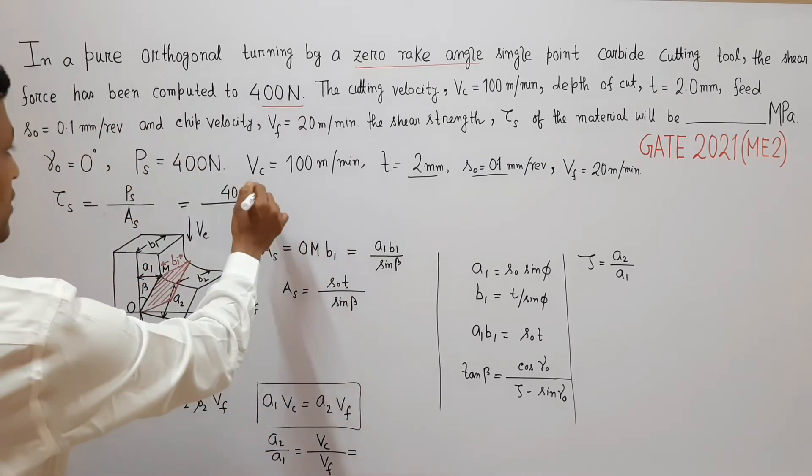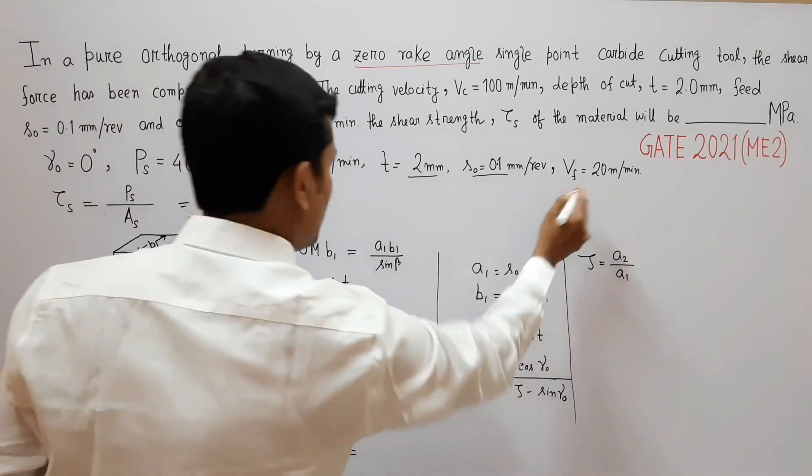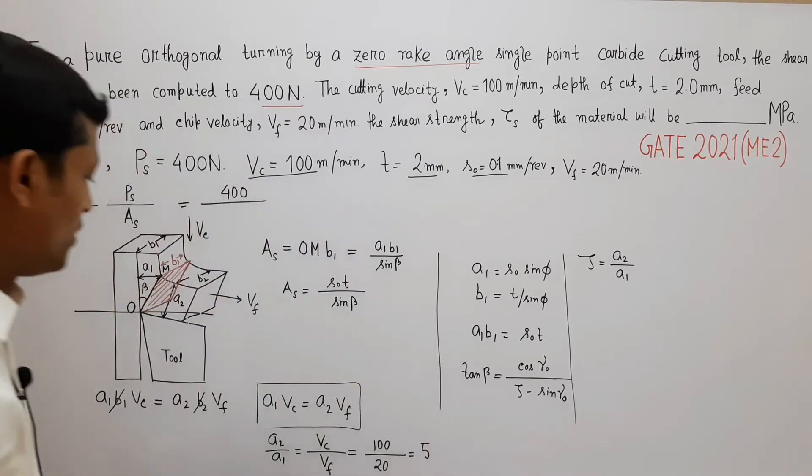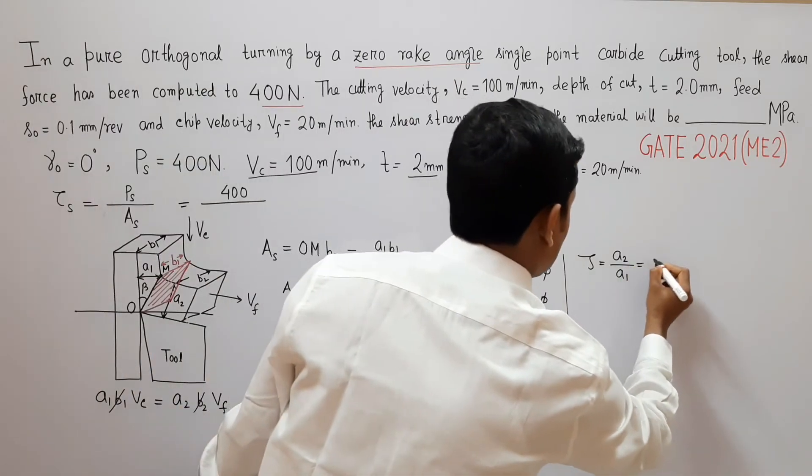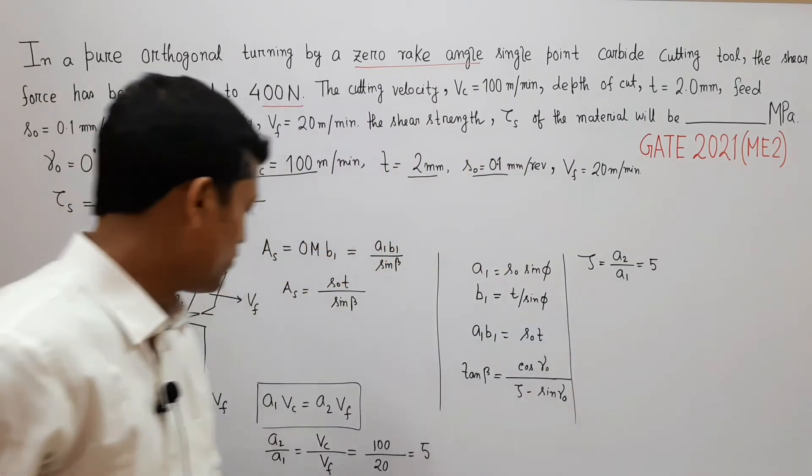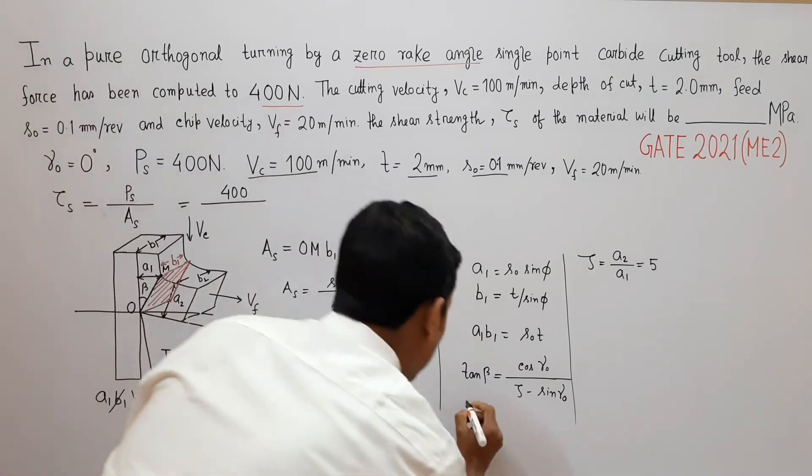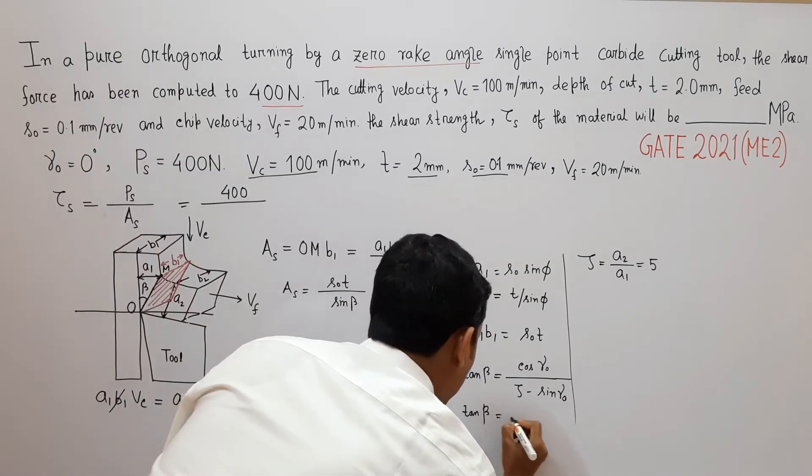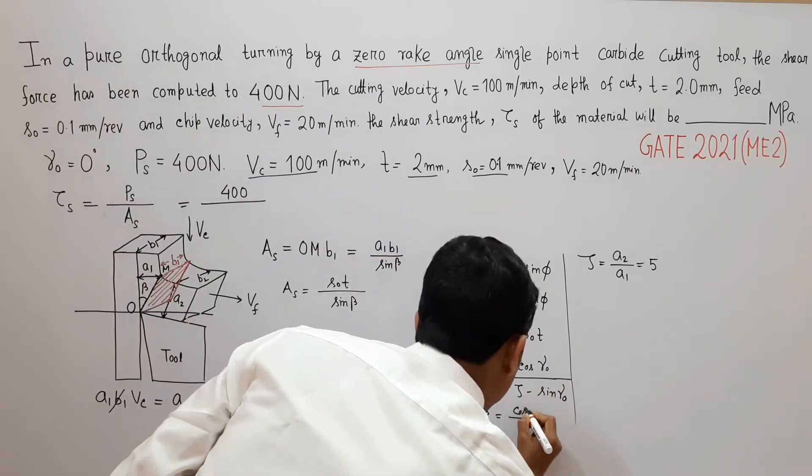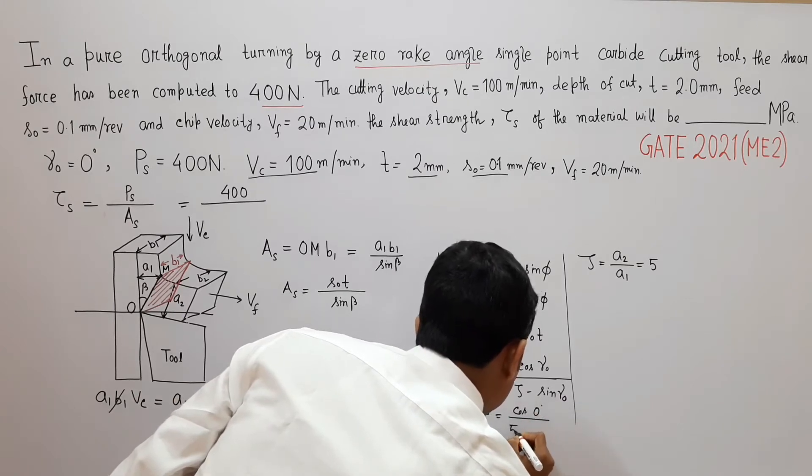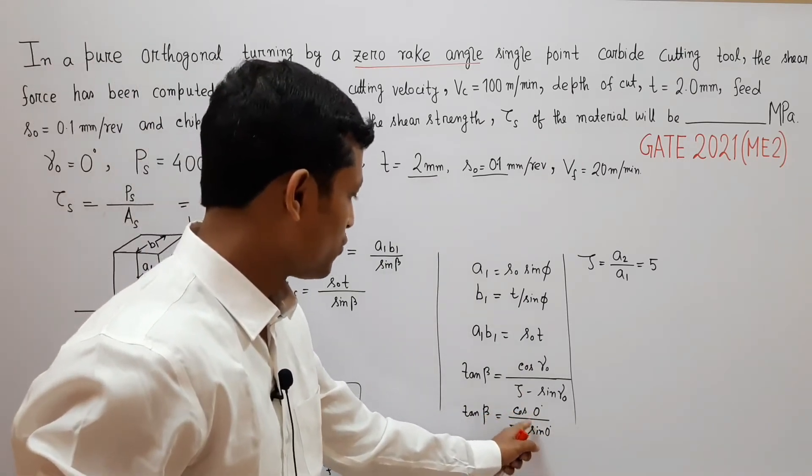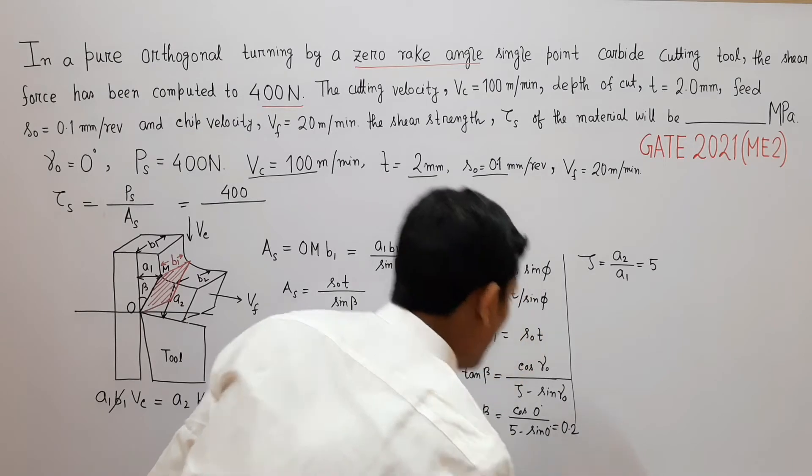Vc is 100 and Vf is 20. So 100 by 20 that is 5. So zeta becomes 5. So tan beta becomes how much? Gamma_o is 0 degrees that is given in the problem. So cos 0 degree divided by 5 minus sine 0. Cos 0 is 1, sine 0 is 0. So 1 by 5 that is 0.2.